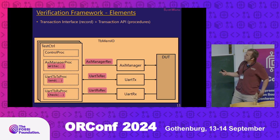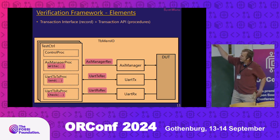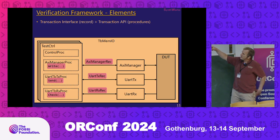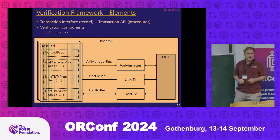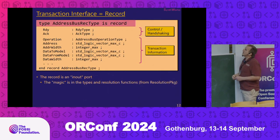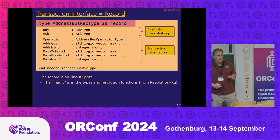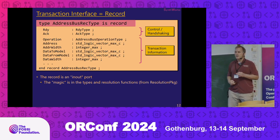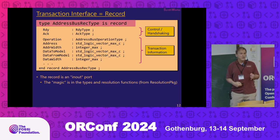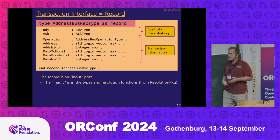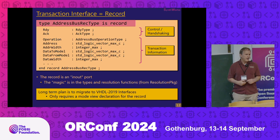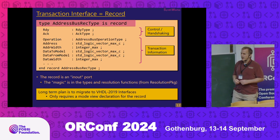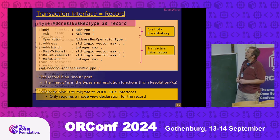Another view of the same thing: our framework has transaction records that act as our interface, and we have our transaction API — the call sequence we use to set up our transactions and operations on our interfaces. We have our verification components and our test sequencer. The transaction interface is simply a record. What's special in there is the types used in the record have resolution functions that allow us to have multiple drivers on it that sensibly and easily resolve things. Our long-term plan is to switch to VHDL 2019 interfaces — we're just waiting for a few more vendors to pick up on that, but it is coming.